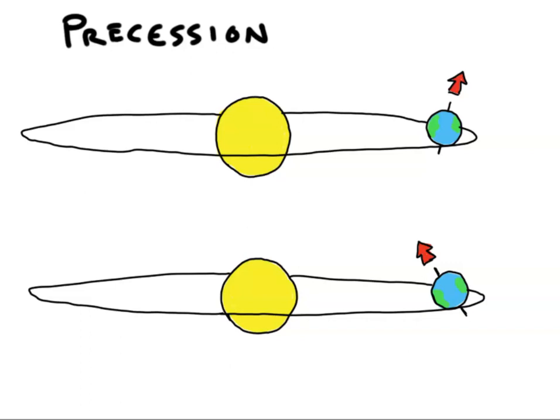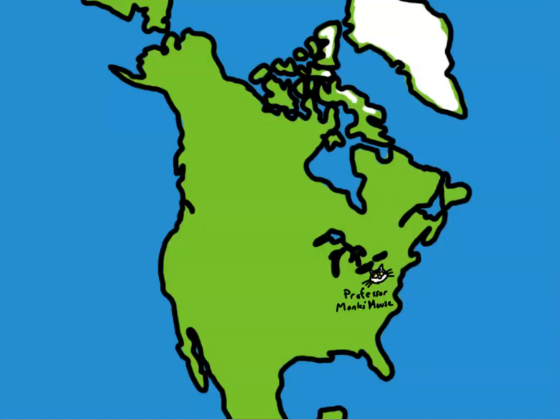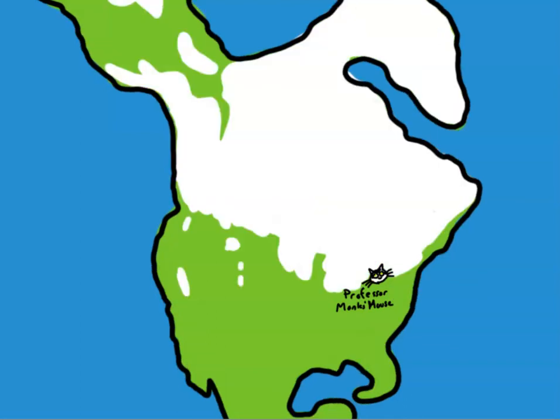This small radiative forcing leads to cooler temperatures, which means snow that fell during the winter may not melt all the way. When snow builds up year after year, glaciers start to form. The northern hemisphere has a lot more land than the southern, so that's where glaciers mostly form during ice ages, and so changes to the northern hemisphere's radiative forcing cause global glacial and interglacial cycles.